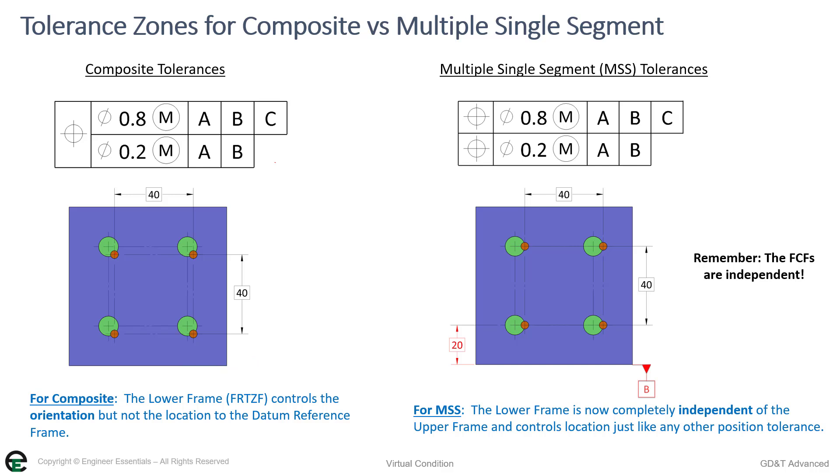Over here on multiple single segment, the bottom frame could just have A in there, and then it would be only a refinement of orientation. So on this one, if we were to knock out B, now we would have the exact same requirement. This is the one case when we only have the one datum on there and it's doing orientation only to the bottom and it is not doing location. This is the one time that multiple single segment and composite will give you the same result. This is the only time. Once we add other datums in there, they are completely different.